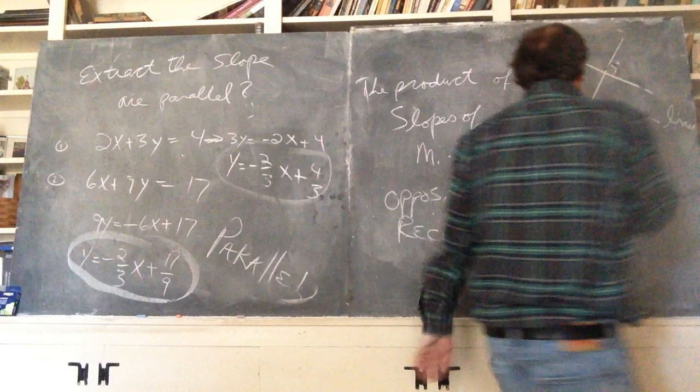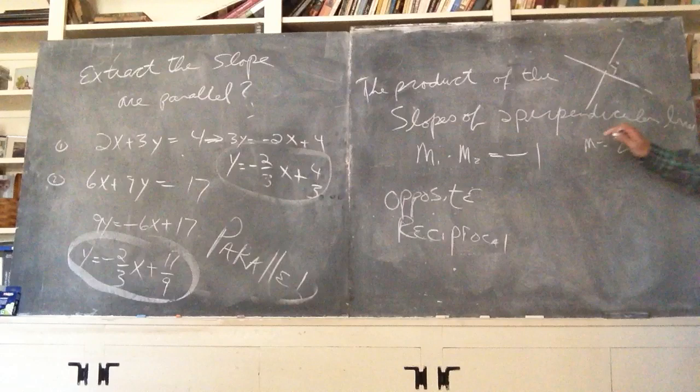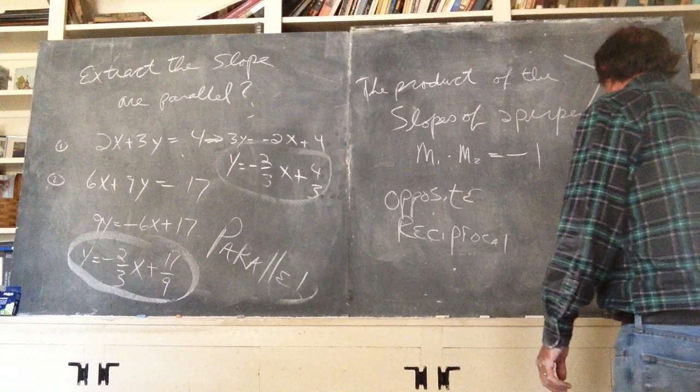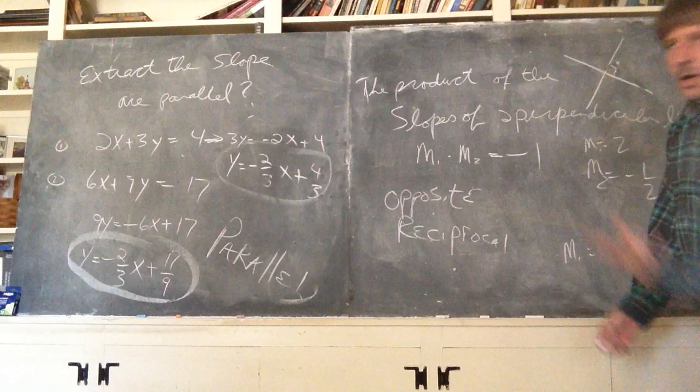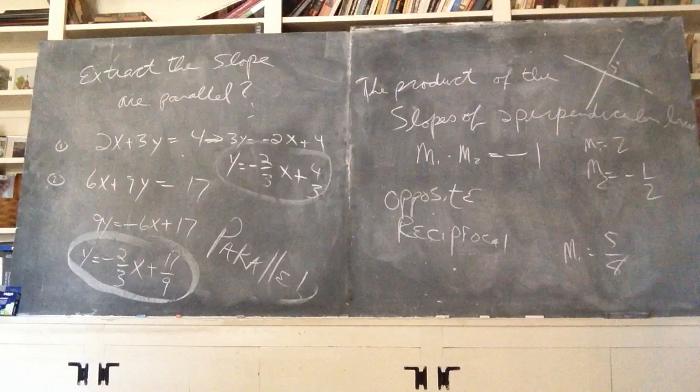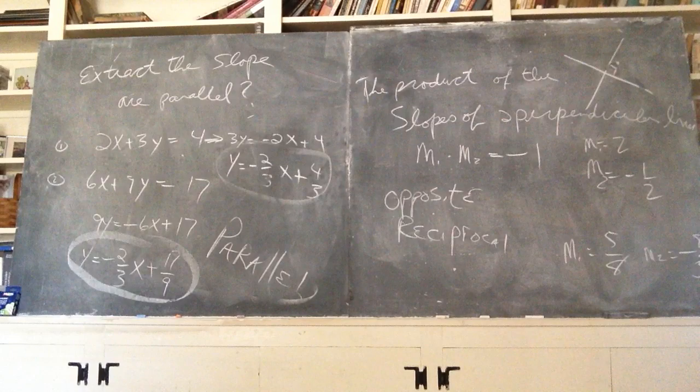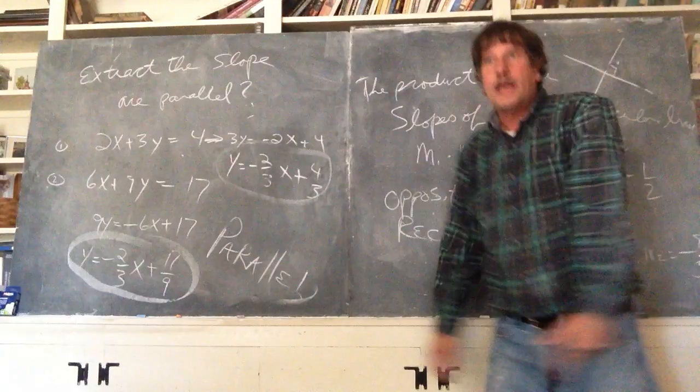So, if one of the slopes was two, a line perpendicular to the slope would be negative one half. If a line has a slope of five eighths, a perpendicular line would have a slope of negative eight fifths. Opposites and reciprocals.